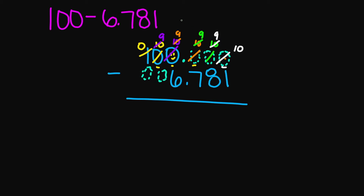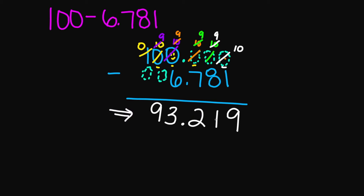Now I can subtract. I have 9, 9, 9, 9, and 10. So 10 minus 1 is 9, 9 minus 8 is 1, 9 minus 7 is 2. Bring that decimal down. 9 minus 6 is 3, 9 minus 0 is 9, and 0 minus 0 is 0. So your final answer is 93.219.